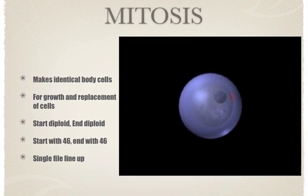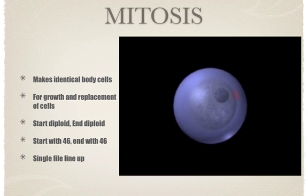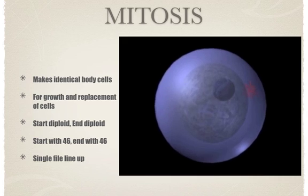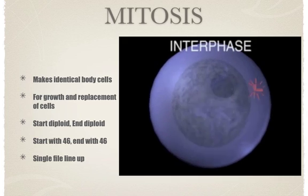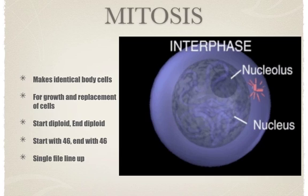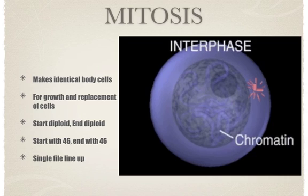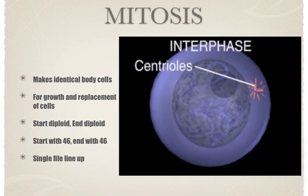The cell cycle is a complex series of continuous events consisting of interphase and mitosis. During interphase, the nucleus and the darker staining nucleolus can be clearly seen, the DNA is copied, and the chromosomes cannot yet be seen because they are still in the form of uncoiled chromatin. In animal cells the centrioles duplicate themselves.